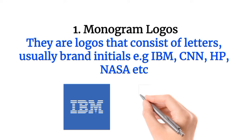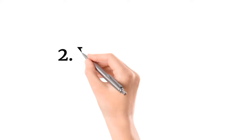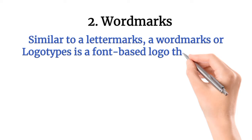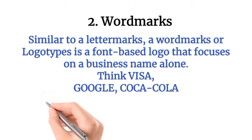The second type of logo we have is the word mark, or logo type. Similar to a letter mark, a word mark or logo type is a font-based logo that focuses on a business name alone. Think of Visa, Google, and Coca-Cola — they only contain the name of the company in a font-based type.